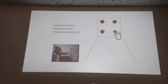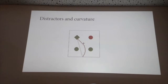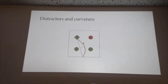We can also look at the path of the movement, the movement trajectory. The measure I'm going to focus on mostly is what we call curvature — the maximum point of deviation in the path of the movement from a line connecting the beginning and end of movement. It's the ratio of those two things that we refer to as curvature.